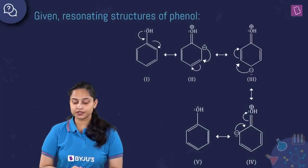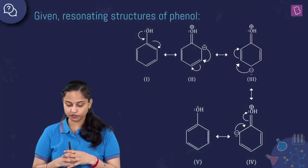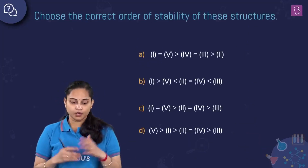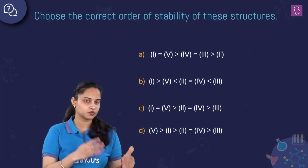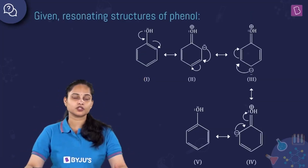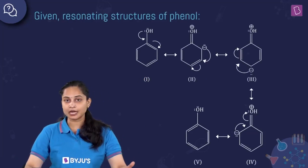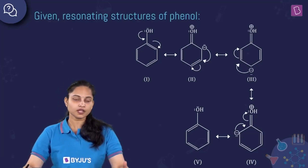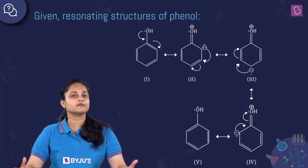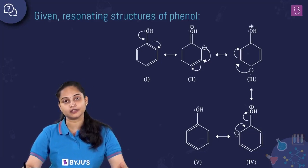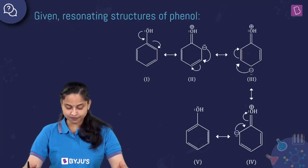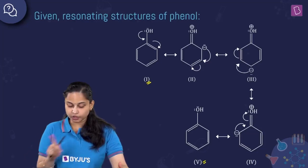The next question gives the resonating structures of phenol — first, second, third, fourth, and fifth — and asks for the correct order of stability. When assessing stability of resonating structures, we first look for the neutral form having no formal charges and maximum covalent bonds. The neutral resonating forms of phenol are the first and the fifth.